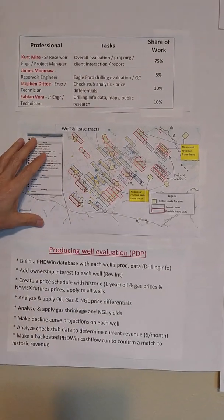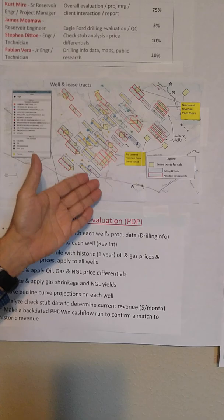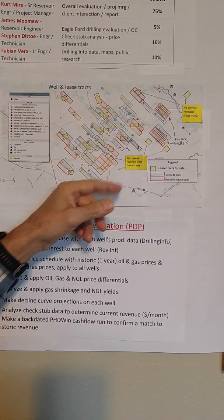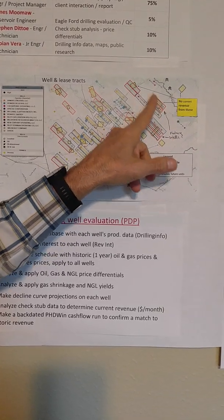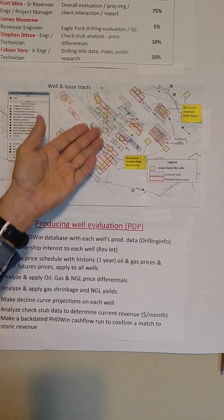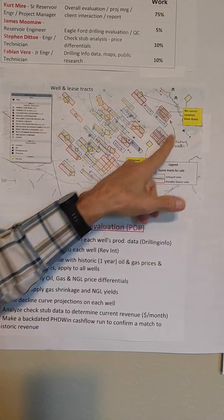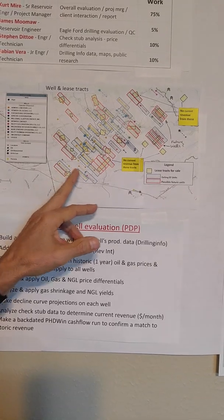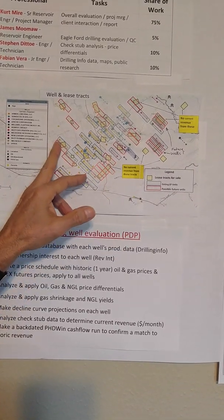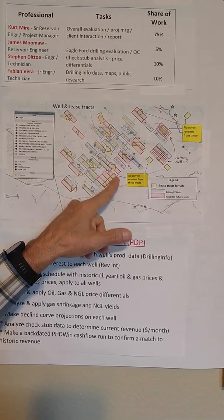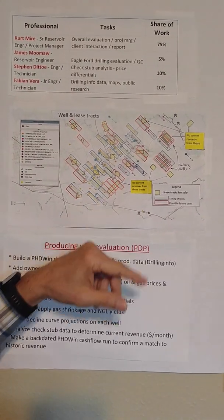Here's a land map with the existing Eagleford wells shown as blue rectangles. The yellow rectangles are the seller's royalty interest tracts. Some tracts are generating revenue from producing wells, but some are outside existing wells and not producing revenue right now. The red tracts are my estimate of where future units would be established that would drill and contribute to the seller's interest.